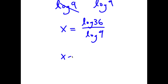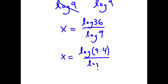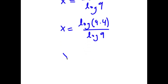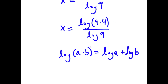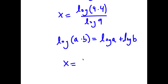So I can rewrite 36 as log of 9 times 4. So I have log of 9 times 4 over log 9. Now, if I have something in the form log of a times b, this is equal to log a plus log b. So log of 9 times 4 is going to equal log of 9 plus log of 4.